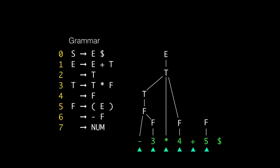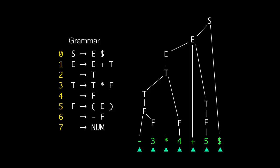The five gets reduced based on production seven — the num is replaced back with an F. Then based on production four, F gets reduced back to a T. Next we notice that E plus T is on the right-hand side of production one, so we reduce that back to an E. Now on the stack we have an E and a dollar sign, which matches the right-hand side of production zero. We can finish and build the final piece of the parse tree — the root. The parse tree is constructed from the leaves up to the root.